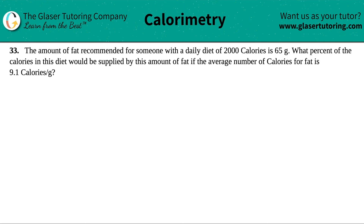Number 33. The amount of fat recommended for someone with a daily diet of 2000 calories is 65 grams. What percent of the calories in this diet would be supplied by this amount of fat, if the average number of calories for fat is 9.1 calories per gram?